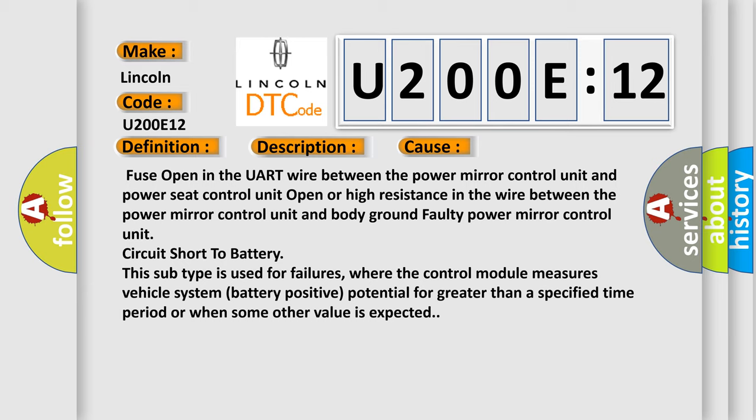This subtype is used for failures where the control module measures vehicle system battery positive potential for greater than a specified time period or when some other value is expected.